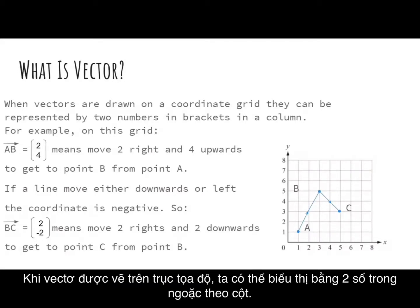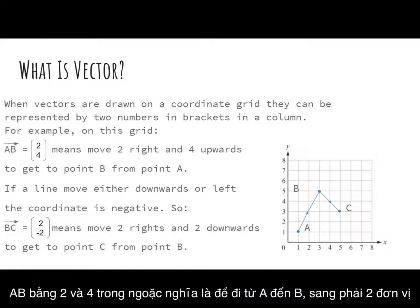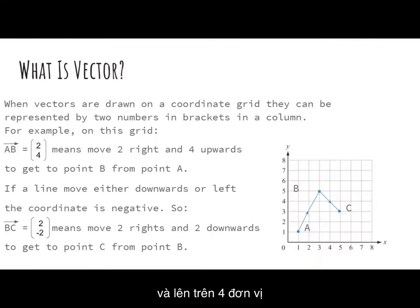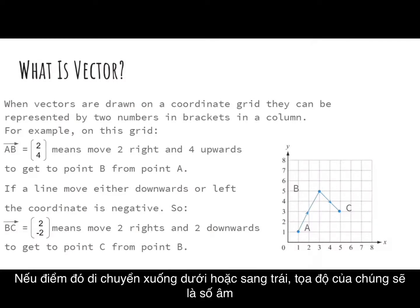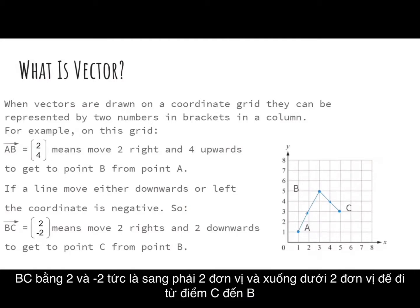When vectors are drawn on a coordinate grid, they can be represented by two numbers in brackets in a column. For example, you can see on this grid: from A to B equals (2, 4), meaning move 2 right and 4 upwards to get to point B from point A. If a line moves either downwards or left, the coordinate is negative.